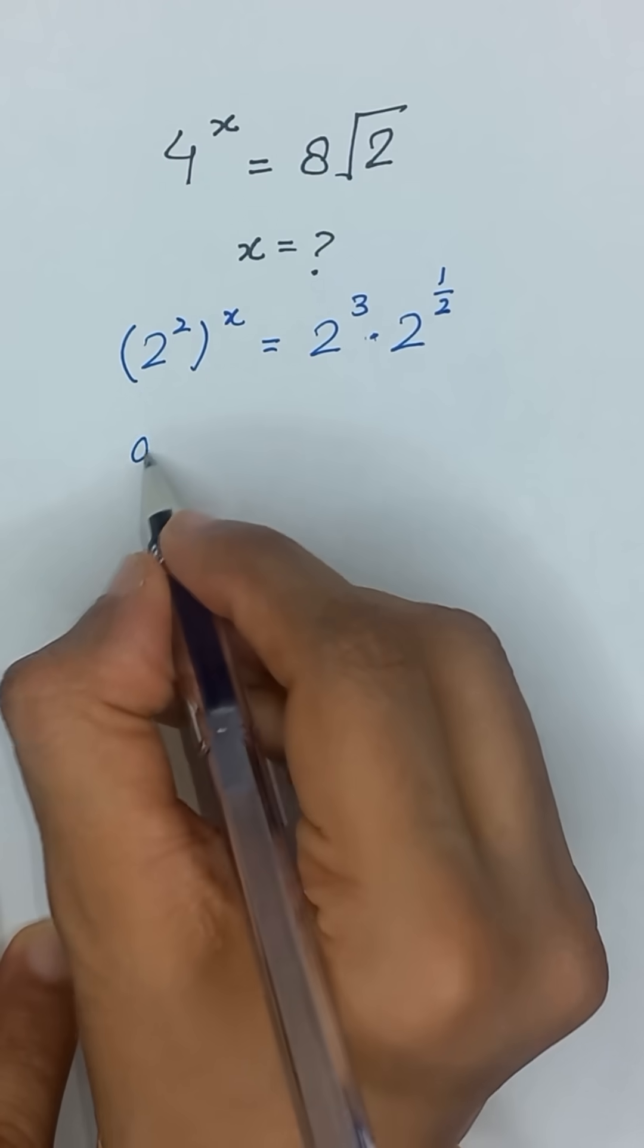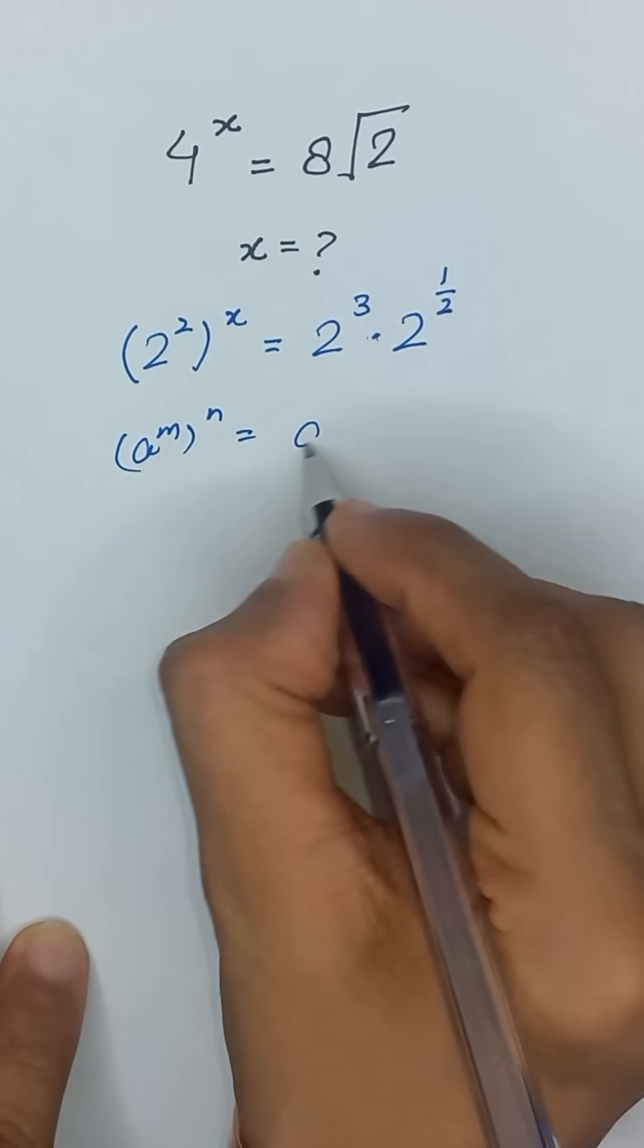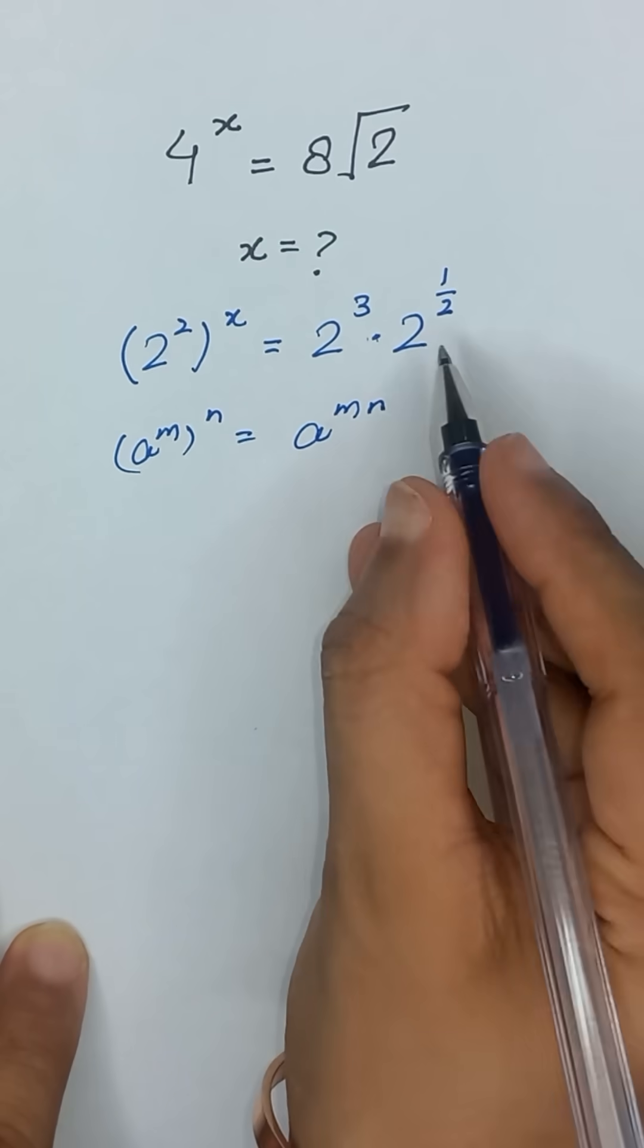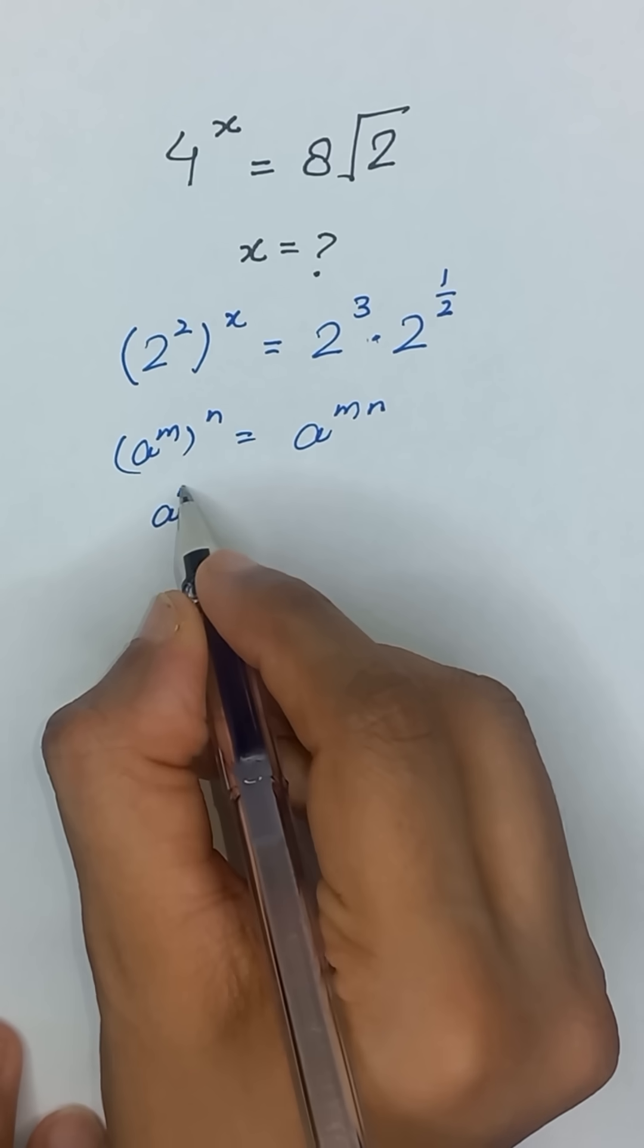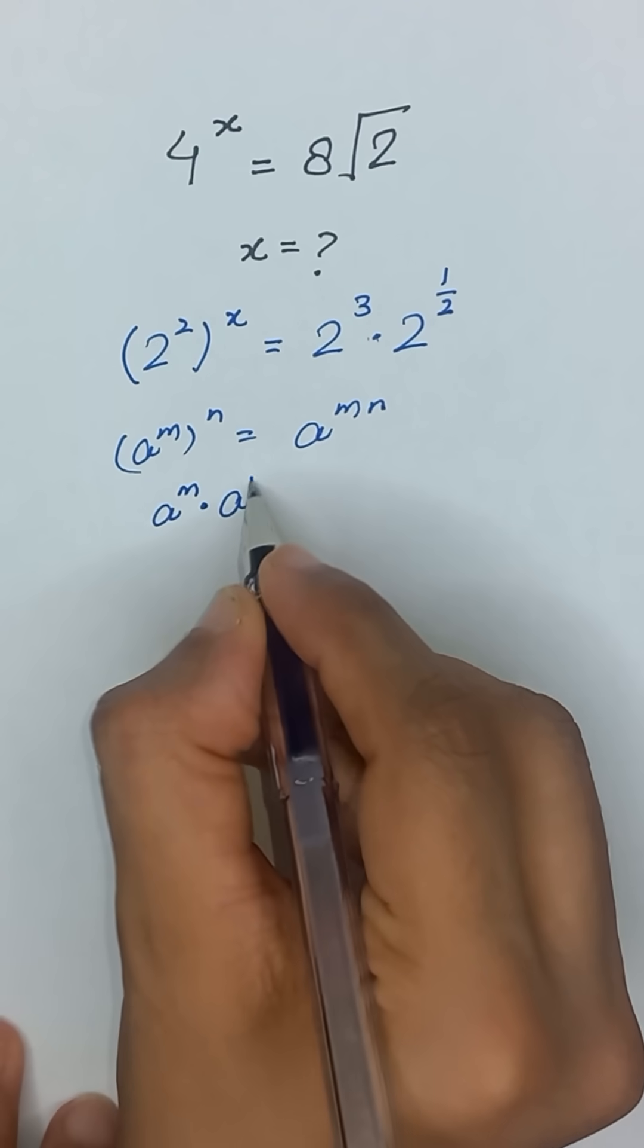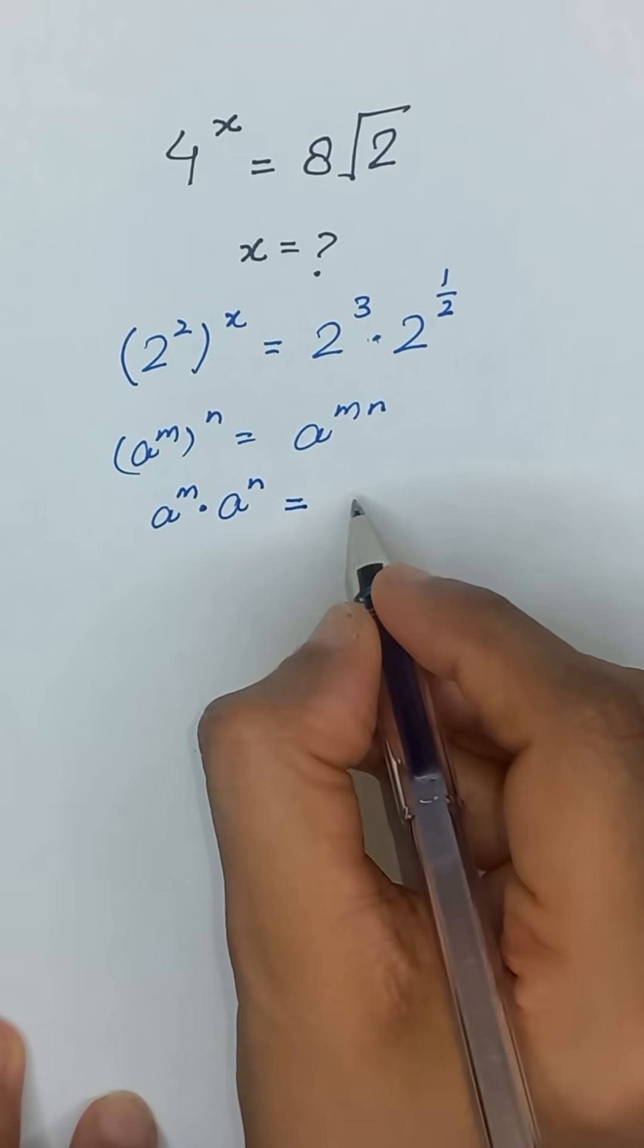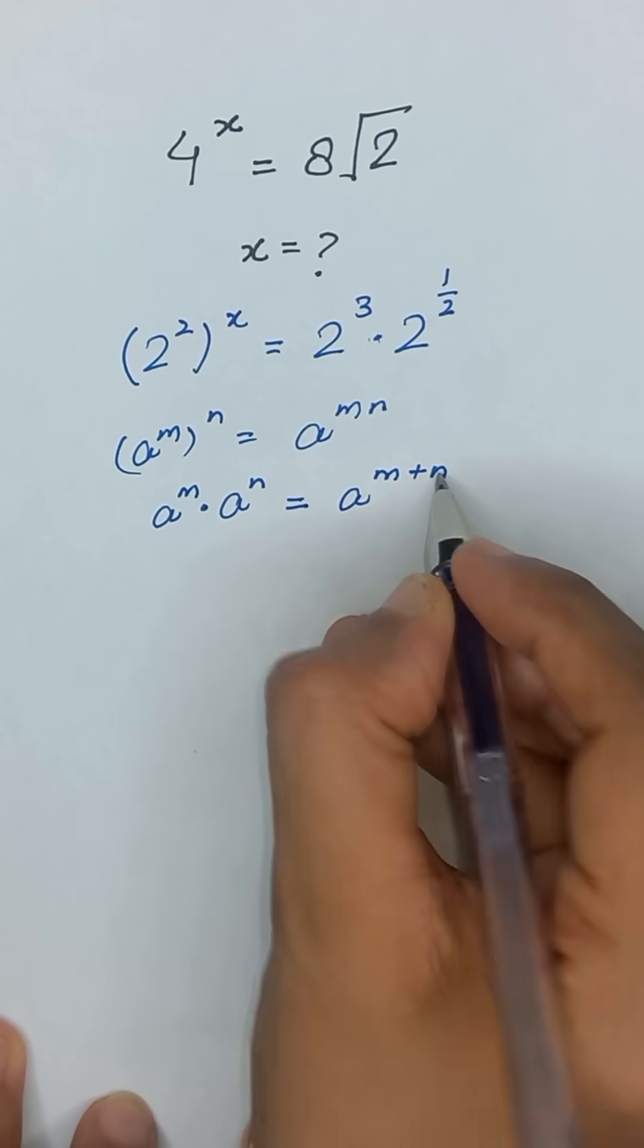We know that a to the power m, whole power n, is equal to a to the power mn. And also, a to the power m times a to the power n is equal to a to the power m plus n.